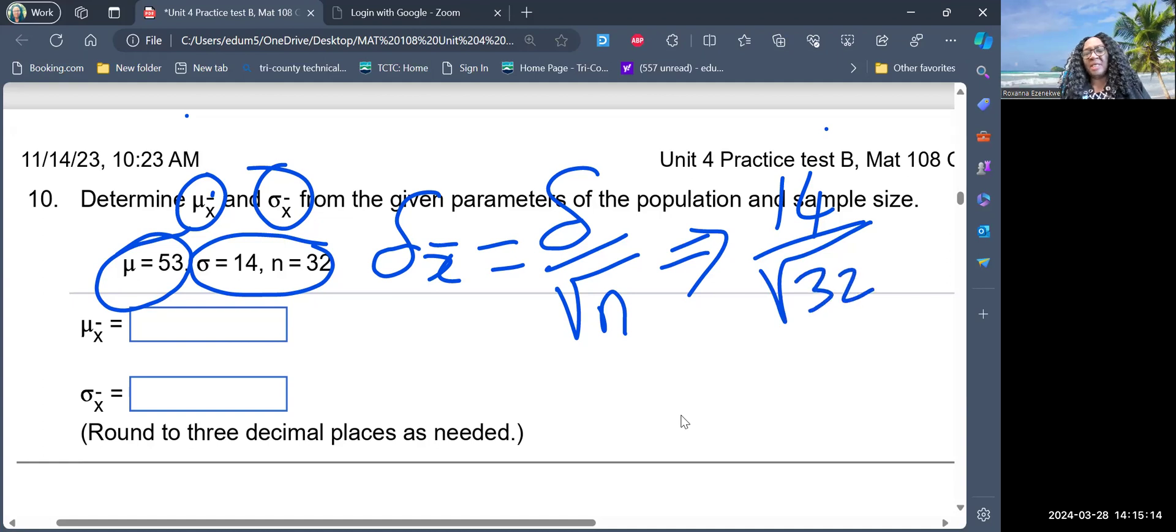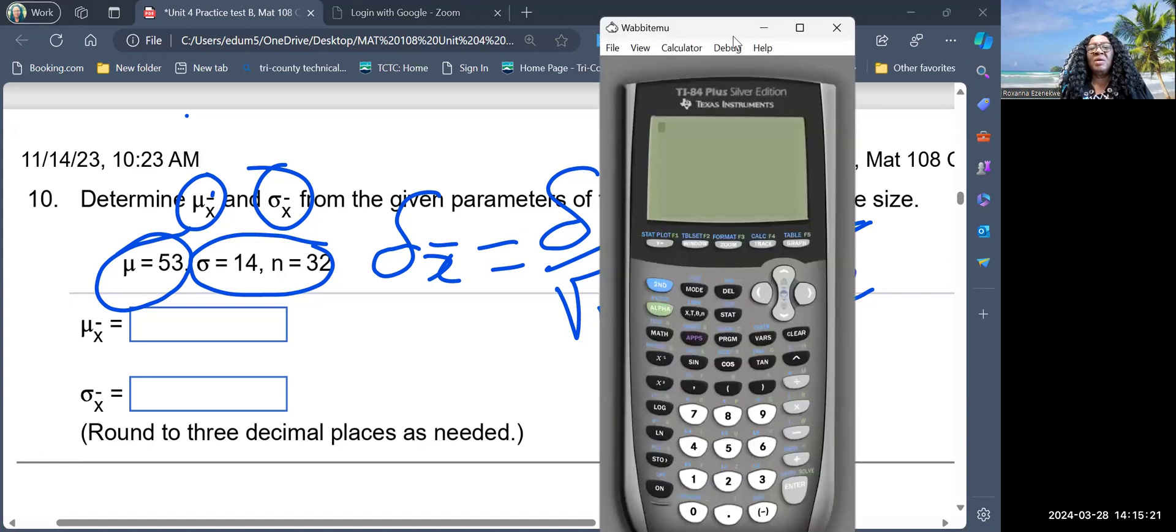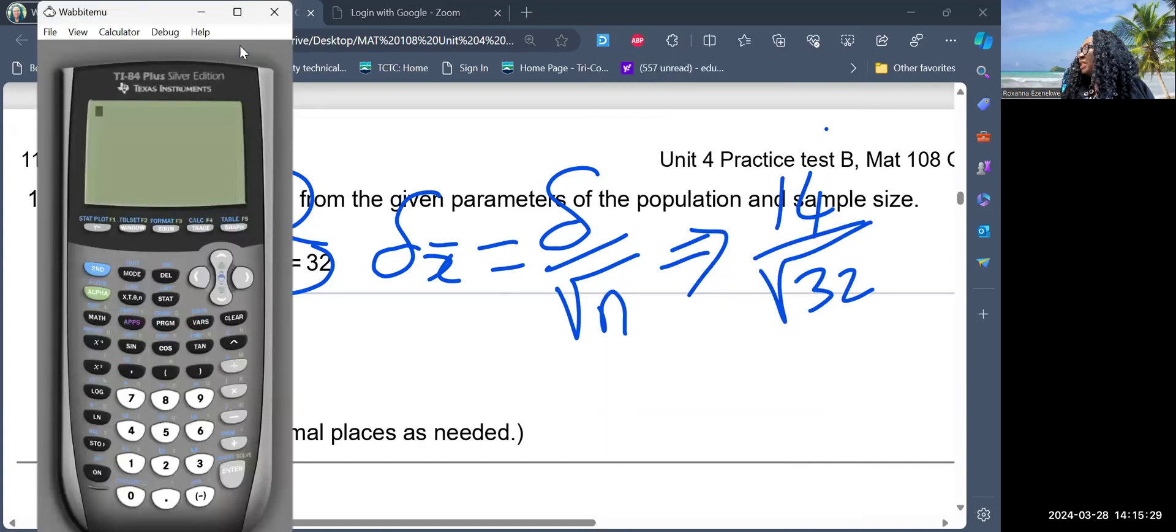So I'm about to get the standard error now. I'll pick up my calculator right here. I want to find the standard error. That is the only thing you're going to calculate because the mean of the central limit theorem is equal to the mean of the original data.